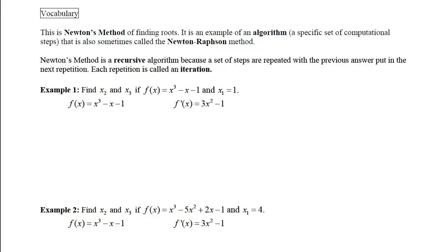So this is Newton's method of finding roots. It's an example of an algorithm, which is a specific set of computational steps, and it's also sometimes called the Newton-Raphson method. Now Newton's method is a recursive algorithm because a set of steps are repeated with the previous answer put into the next repetition, and each repetition is called an iteration.